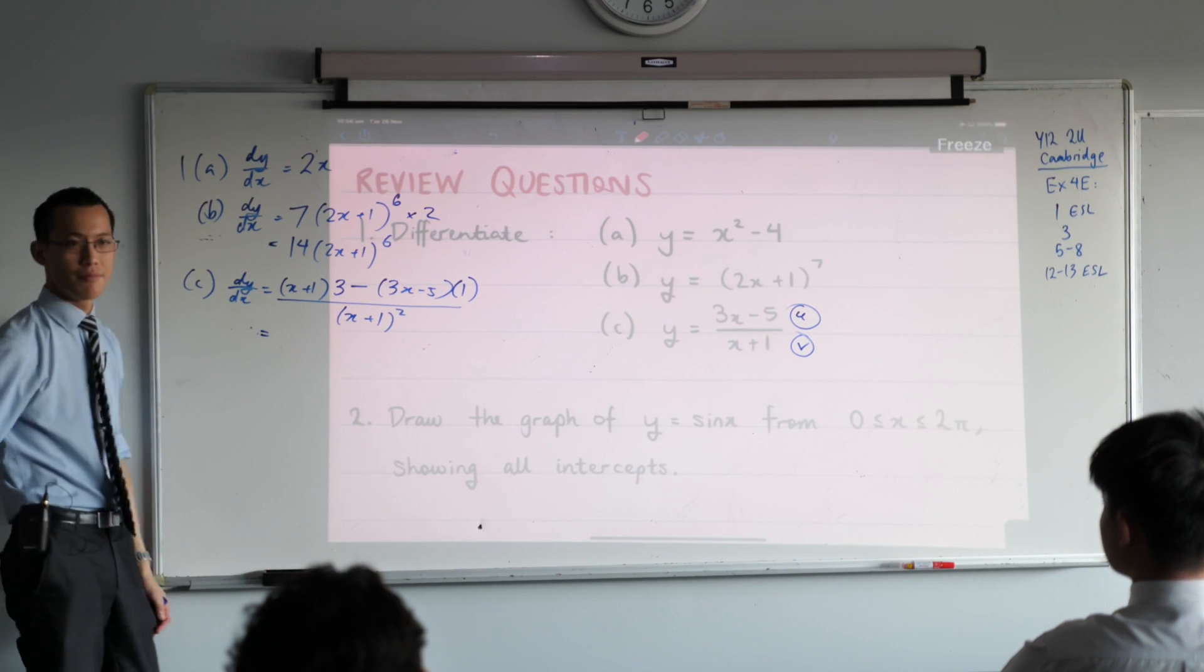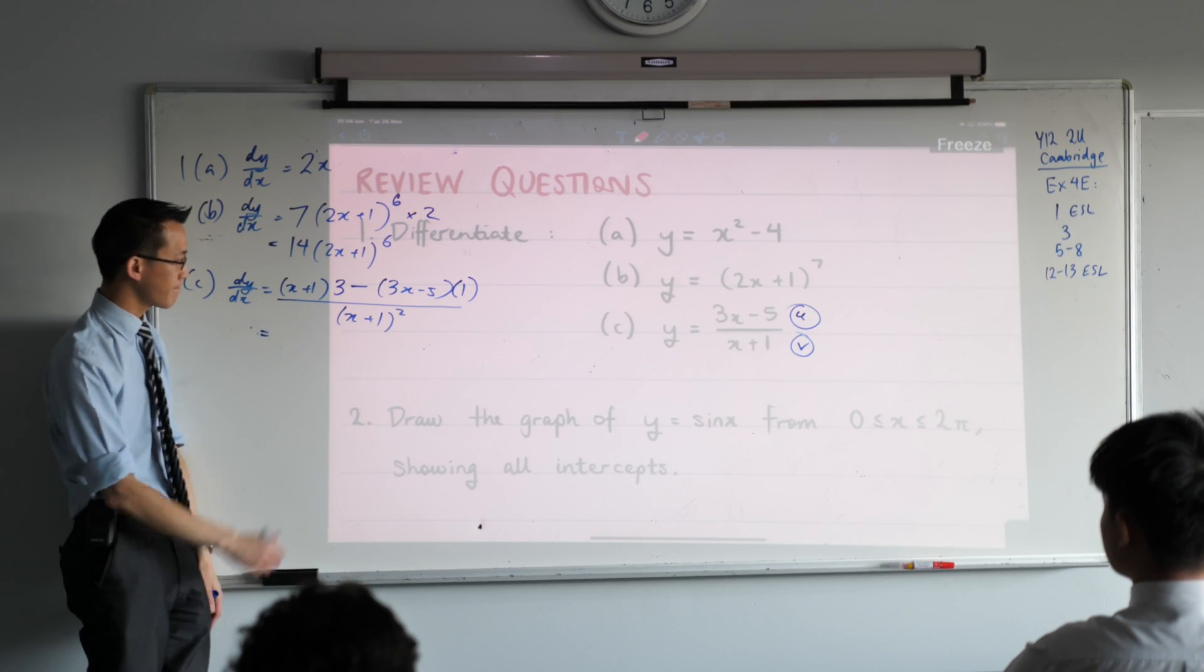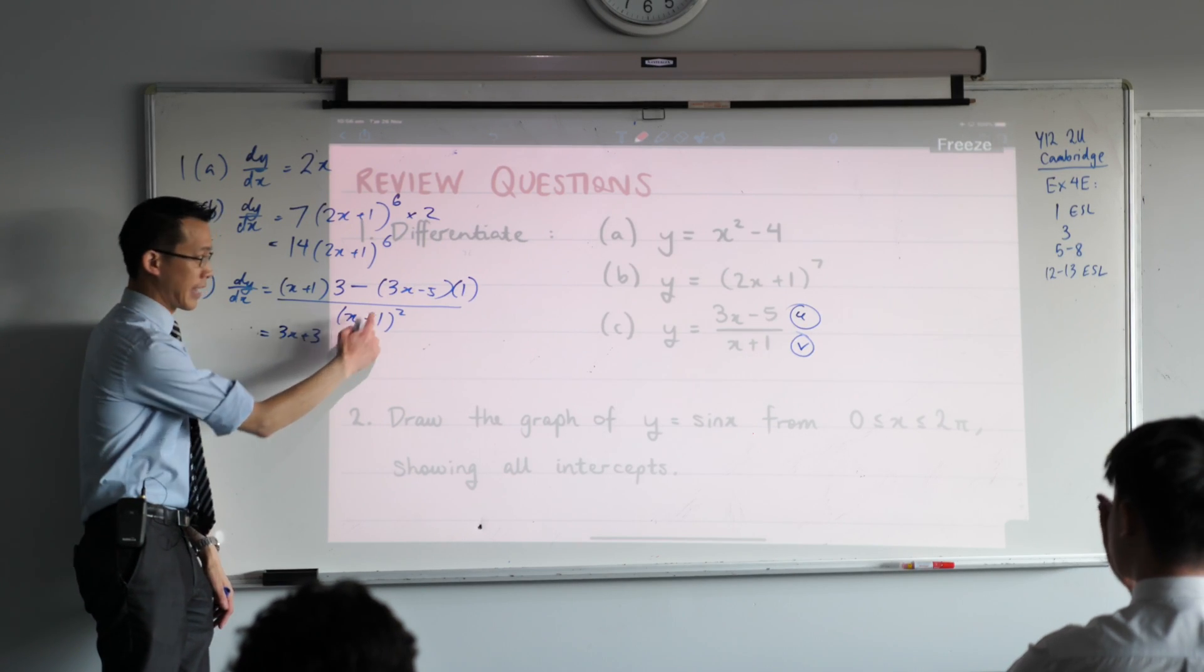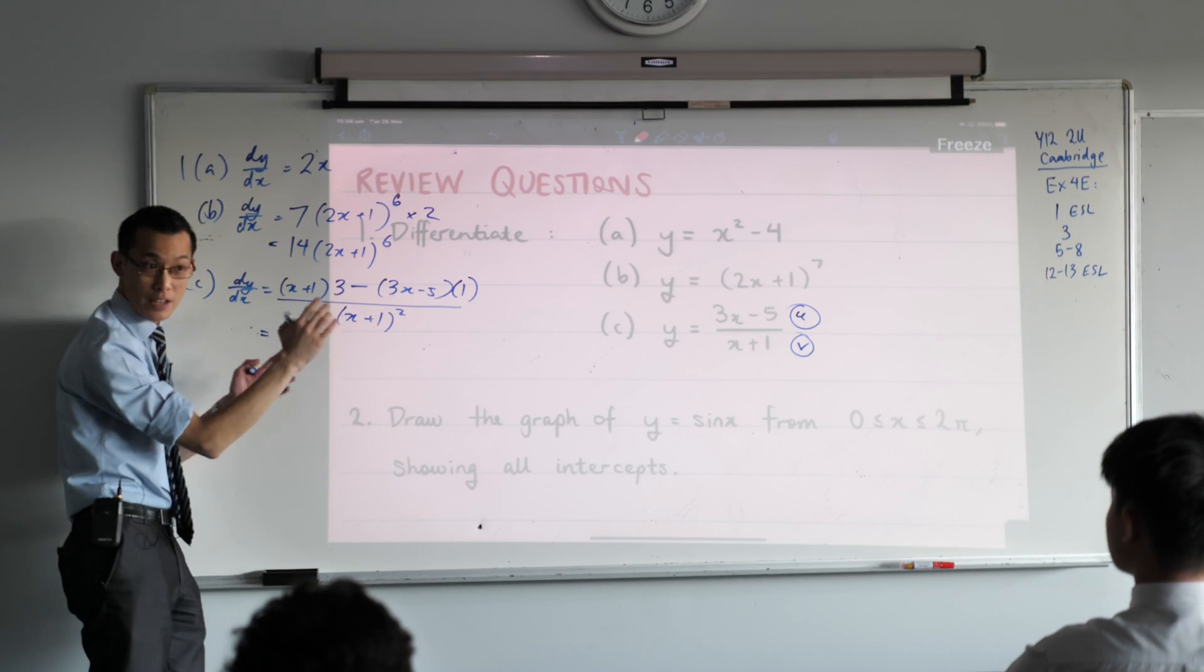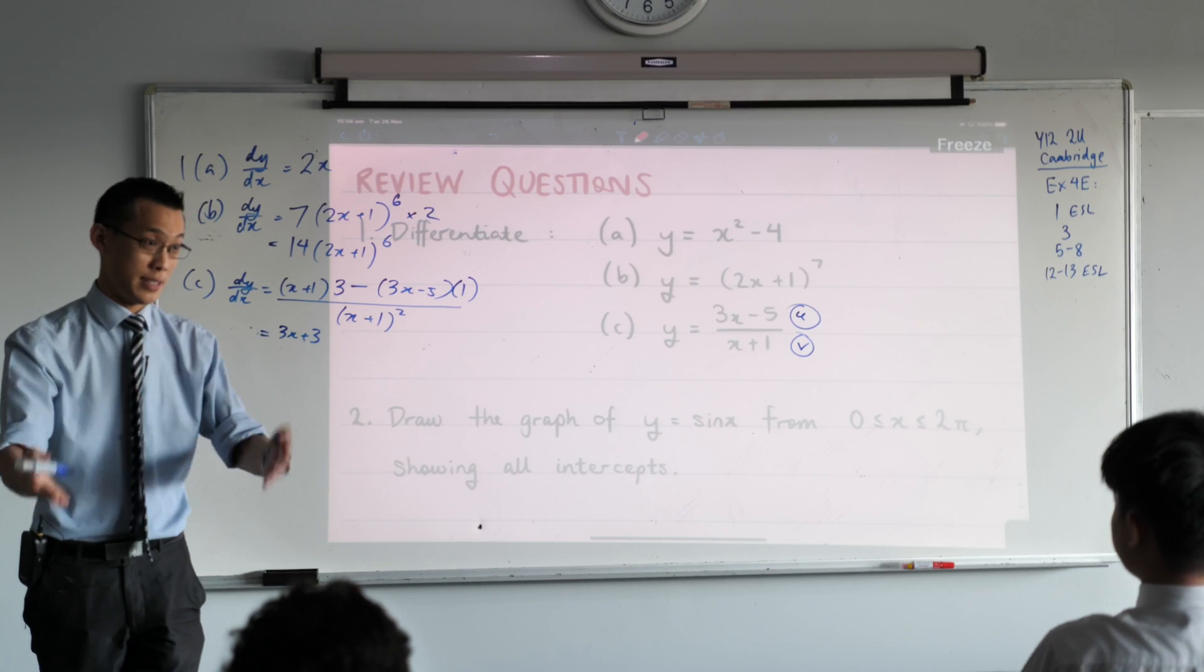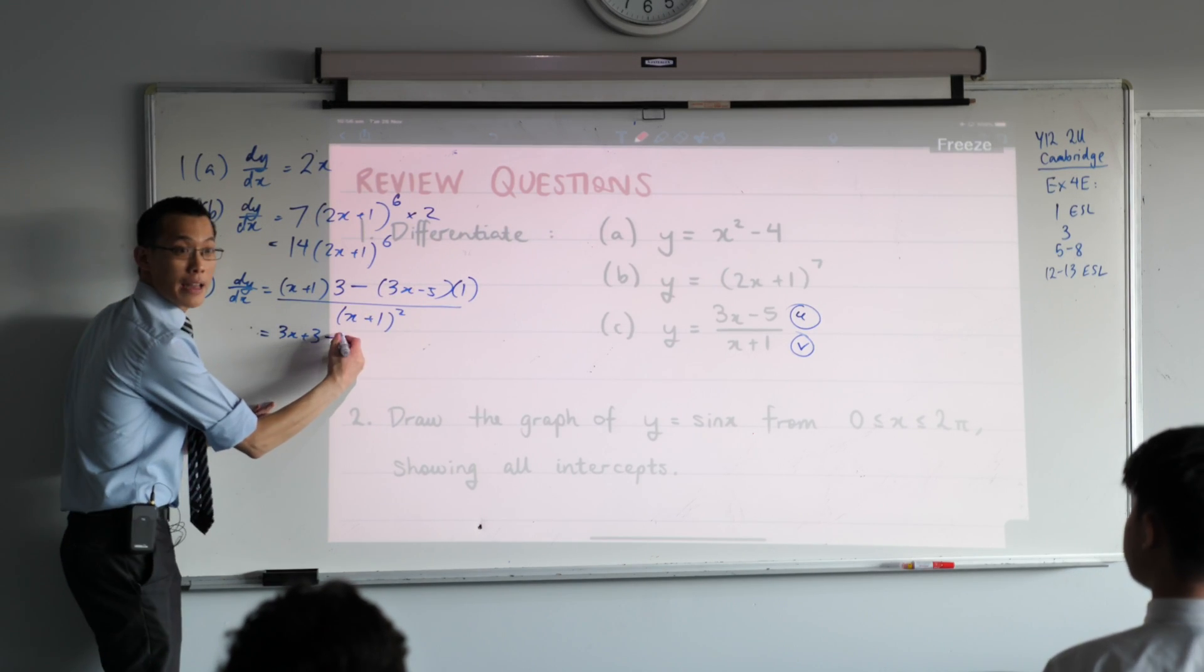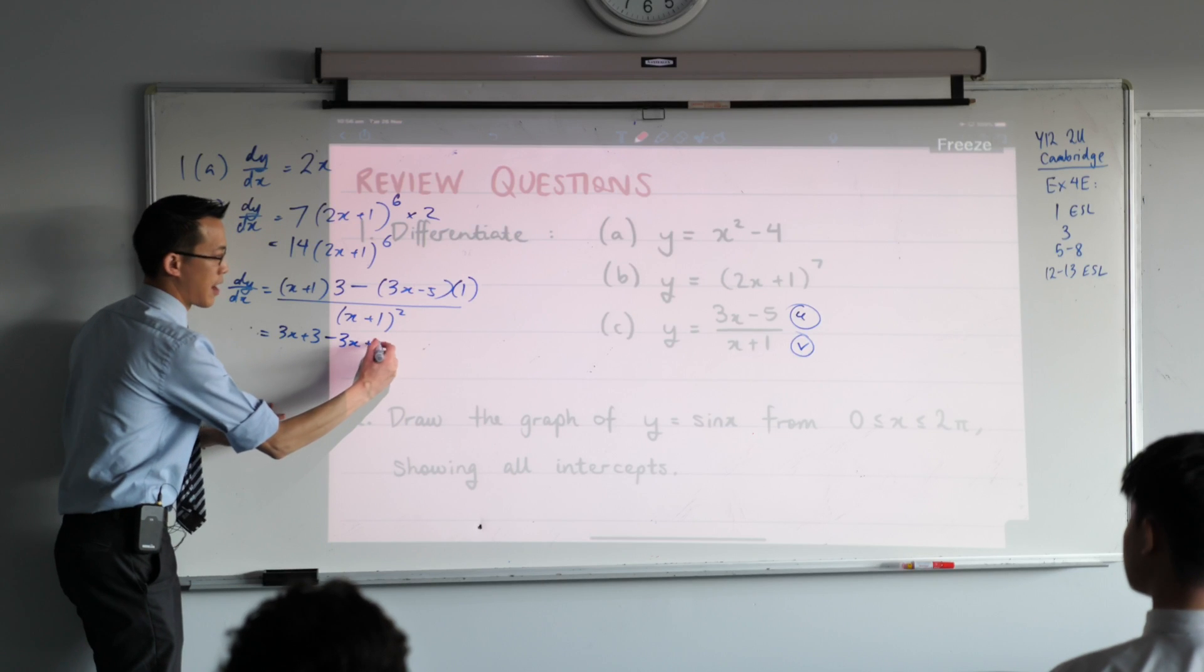Can we tidy up this top part here? 3x + 3 minus 3x minus 5. Now we've really got to be careful here with our negatives. The negatives are one of the trickiest things about the quotient rule. There's a double negative here, so I'm going to go minus 3x plus 5.